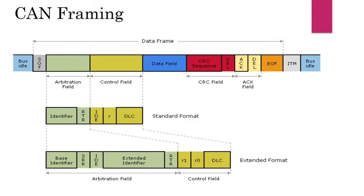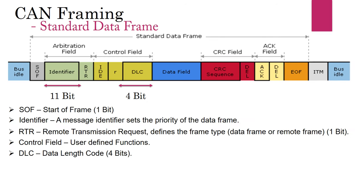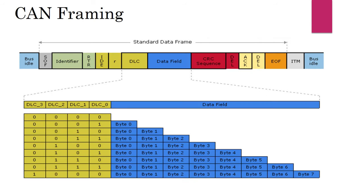The IDE bit in the control field stands for identifier extension. A dominant IDE bit indicates an 11-bit standard frame identifier, while a recessive IDE bit indicates a 29-bit extended frame identifier. Also in the control field, we have data length code bits, which define the length of the data in the data field. In the data field, a maximum of 8 bytes can be sent. Four bits are available in the DLC to configure the number of bytes required in a particular message frame.